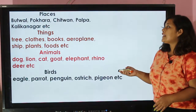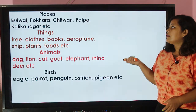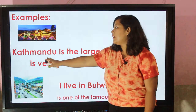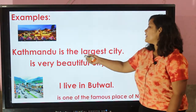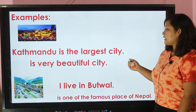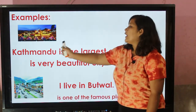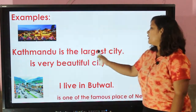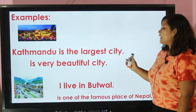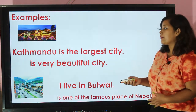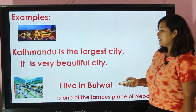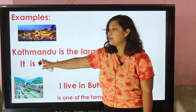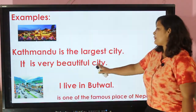Let's look at some examples. 'Kathmandu is the largest city.' Here we are going to describe about Kathmandu. Kathmandu is the largest city, so we can use 'it' instead of writing Kathmandu again. 'It is a very beautiful city.'